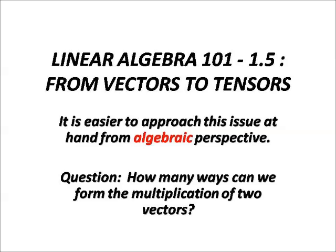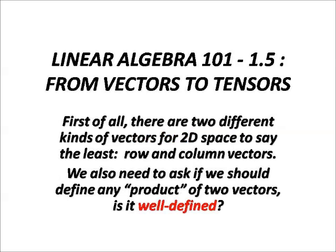It is easier to approach this issue at hand from an algebraic perspective. How many ways can we multiply those two vectors? First of all, there are two different kinds of vectors for 2D space: row and column vectors. How can we put them together and multiply them? Yet the definition of product is still well-defined.